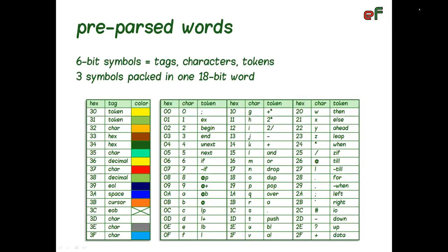The second concept is thereof preparsed words. Any text, including source code, is composed of 6-bit symbols. Symbols are either tags, characters, or tokens, and three symbols are packed into one 18-bit word. Tags characterize symbols that follow until the next tag. There are 16 tags, most of them with associated color.